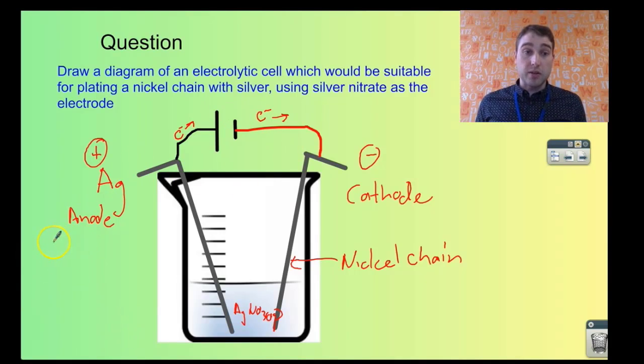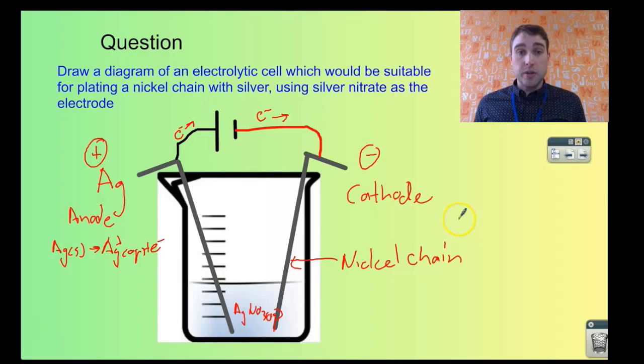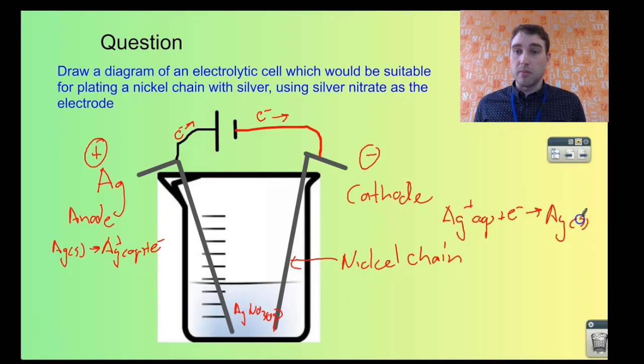At the anode, we're getting oxidation. So the solid silver is going to silver ions plus an electron. That's oxidation. Over here, silver ions are being reduced. We've got silver ion in solution gaining an electron, and we're reducing that to silver metal. We're reducing that to silver metal on the nickel chain. The nickel chain in solution is going to be plated with silver from the solution.